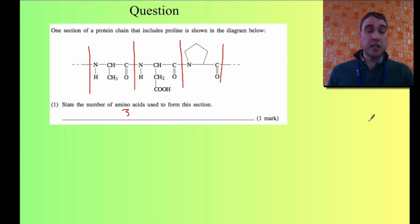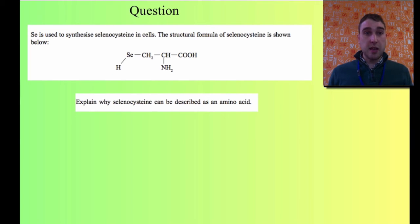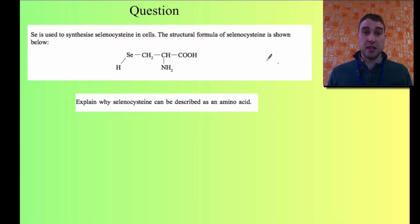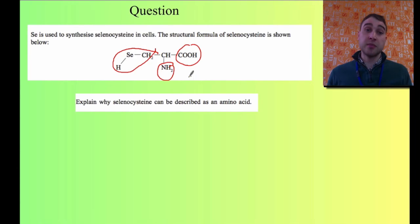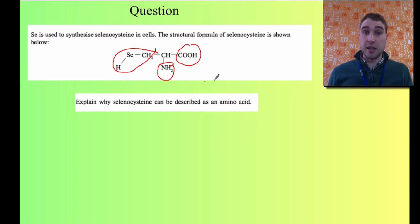We're going to look at proteins in more detail in another video. Here's another question. It says: selenium is used to synthesize selenocysteine in cells — there's the structure. Explain why selenocysteine can be described as an amino acid. It has an amine group and a carboxyl group, and it also has a variable side chain. The important bit is it's got the amine group and the carboxyl group — that makes it an amino acid.